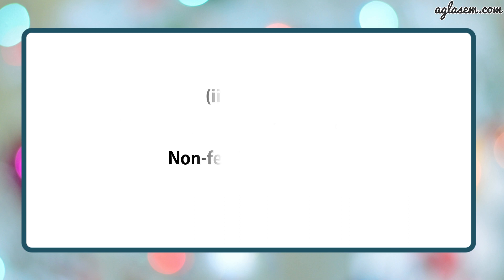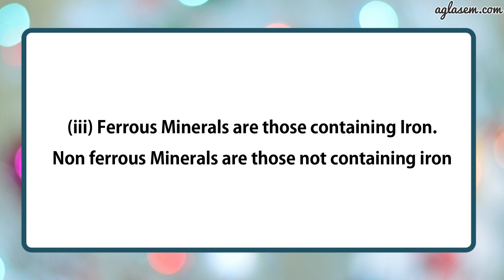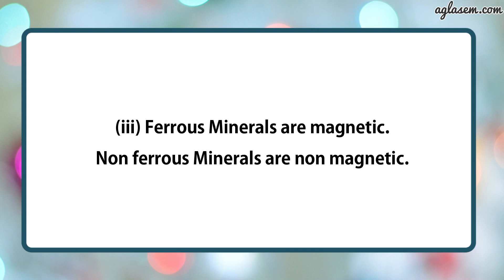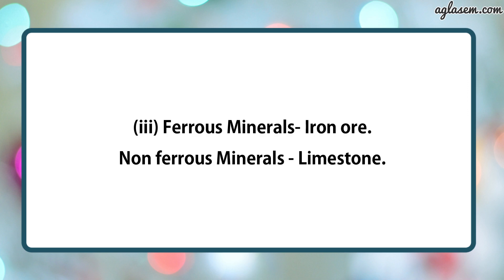Third part: differentiate between ferrous and non-ferrous minerals. Ferrous minerals are those containing iron, whereas non-ferrous minerals are those that do not contain iron. Ferrous minerals are magnetic, whereas non-ferrous minerals are non-magnetic. Examples of ferrous minerals are iron ore, whereas examples of non-ferrous minerals include limestone.